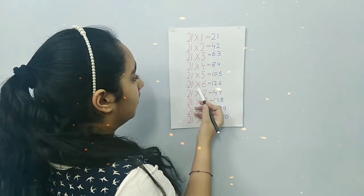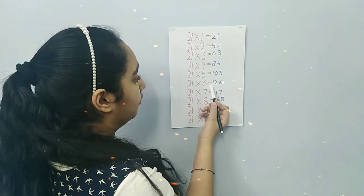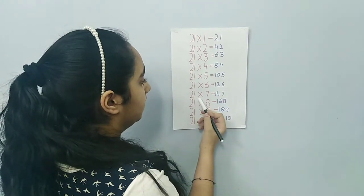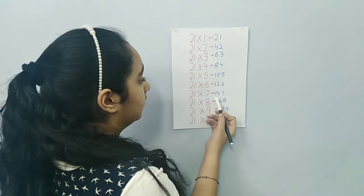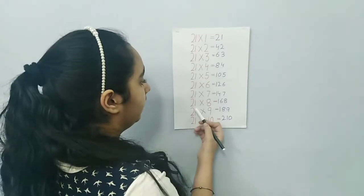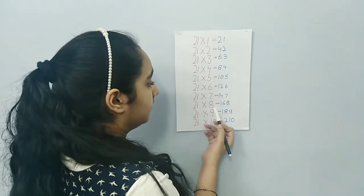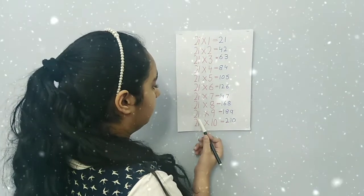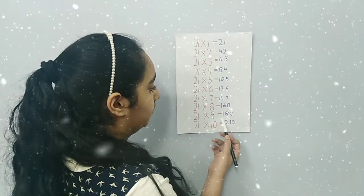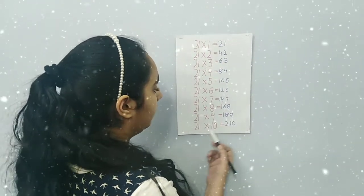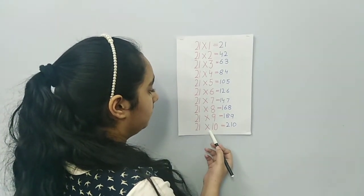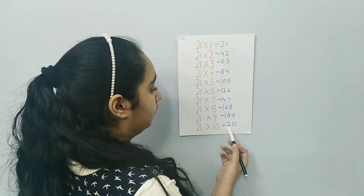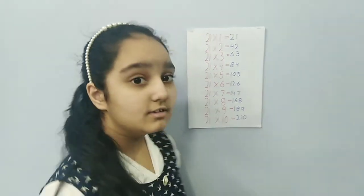21 by 6 is equal to 126, 21 by 7 is equal to 147, 21 by 8 is equal to 168, 21 by 9 is equal to 189, and in the last, 21 by 10 is equal to 210.